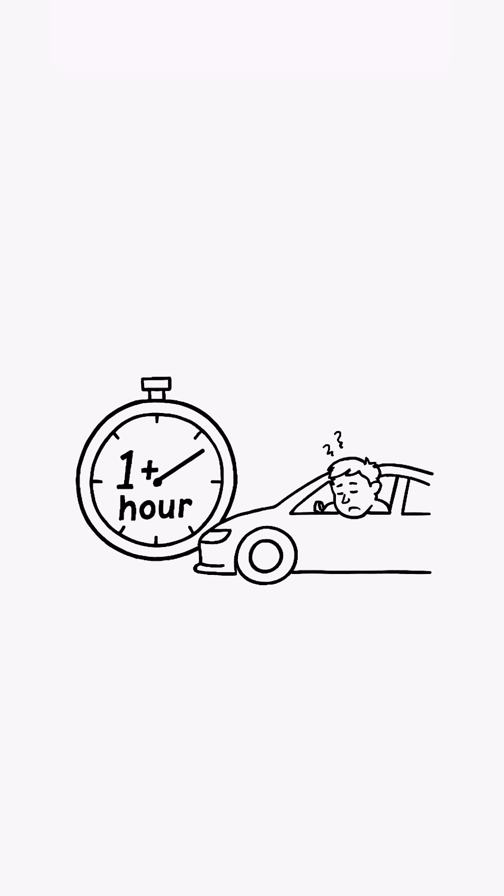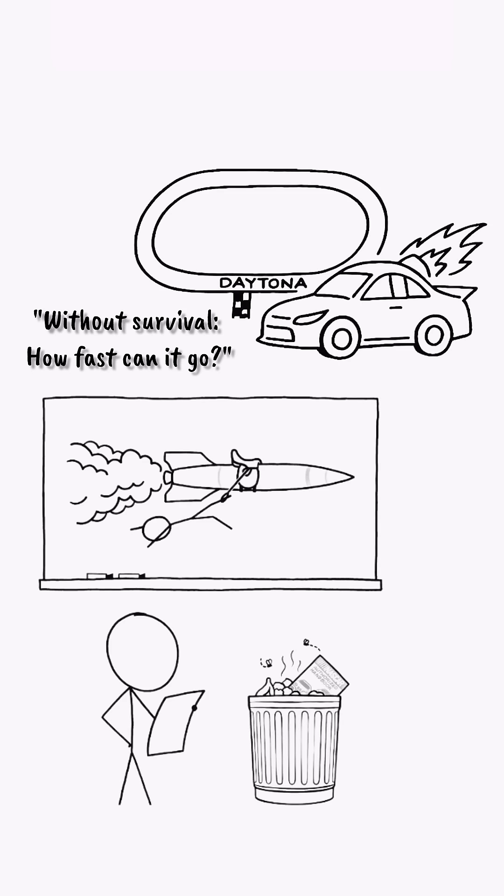Human biology limits us to Daytona finishing times over an hour, but what if we dropped the survive requirement? How fast can we get the vehicle to go around the track?